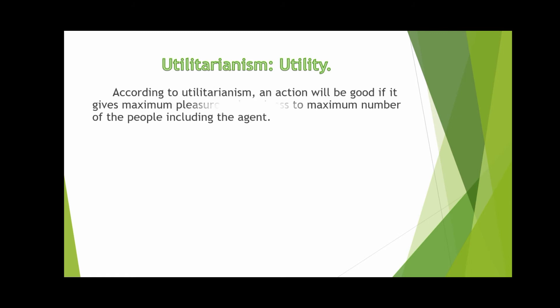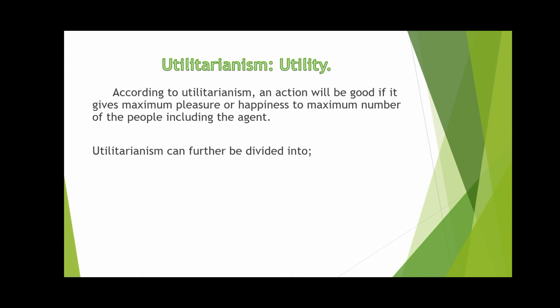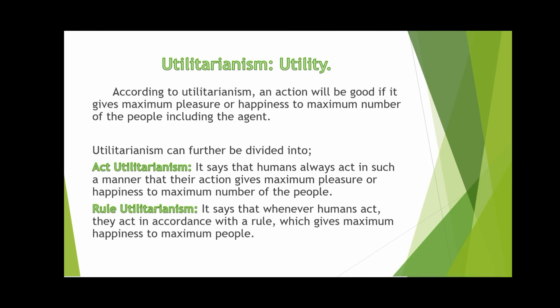Utilitarianism, which is also known as utility. According to utilitarianism, an action will be good if it gives maximum pleasure or happiness to the maximum number of people, including the agent. Utilitarianism can further be divided into two categories: act utilitarianism and rule utilitarianism. Act utilitarianism says that humans always act in such a manner that their action gives maximum pleasure or happiness to the maximum number of people. Rule utilitarianism says that whenever humans act, they act in accordance with a rule which gives maximum happiness to the maximum number of people.